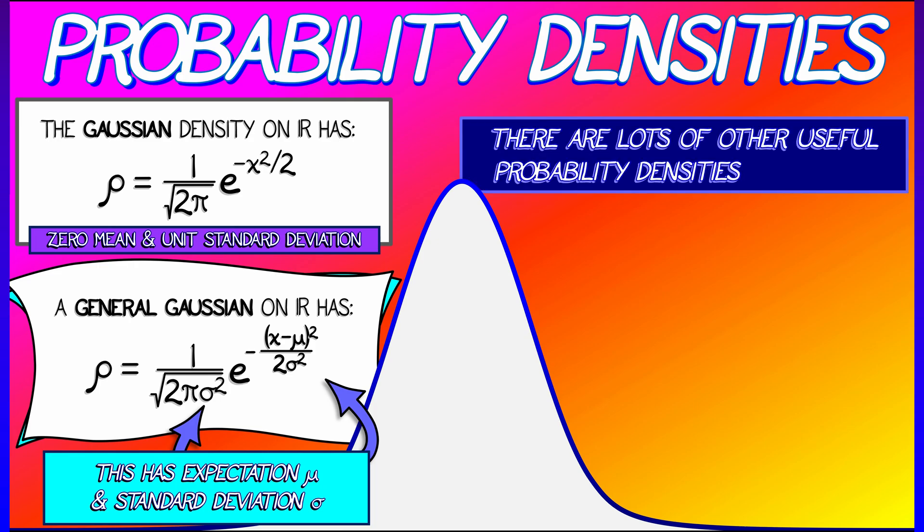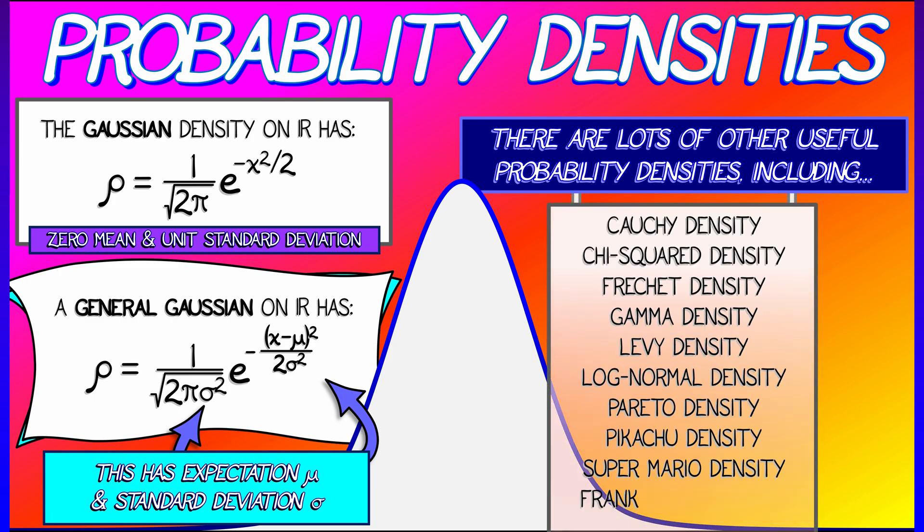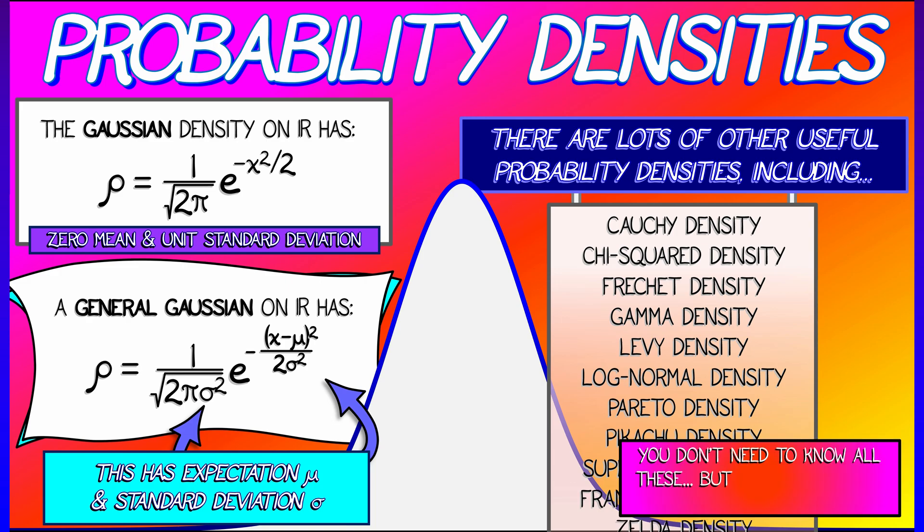There are so many probability densities out there. There are gamma densities and Cauchy densities and Pareto densities and all kinds of stuff. Now you don't need to memorize all these density formulae—unless you want to become a statistician, maybe—but you do need to know that they exist, it's good to be familiar with the names, and it's good to be really familiar with Gaussians. We're going to see those guys a lot.